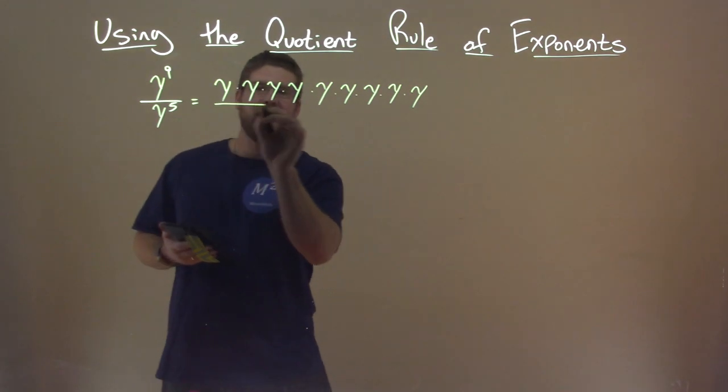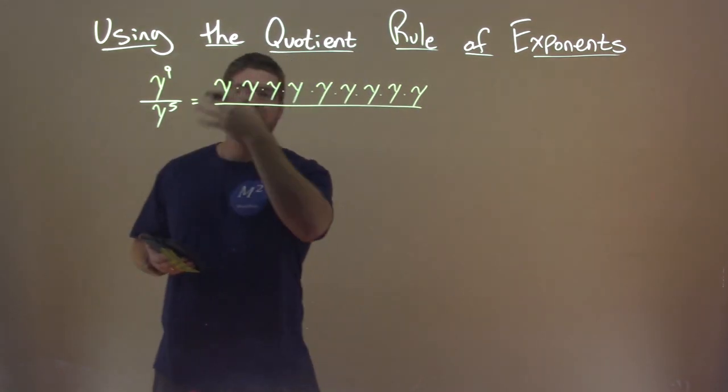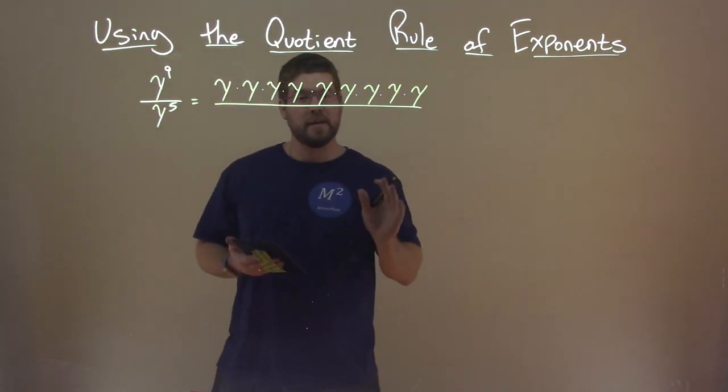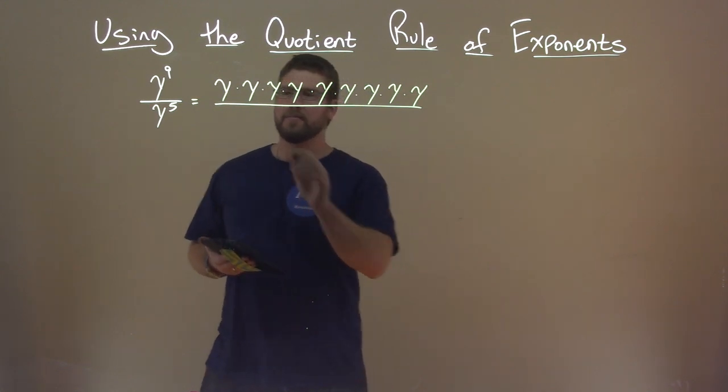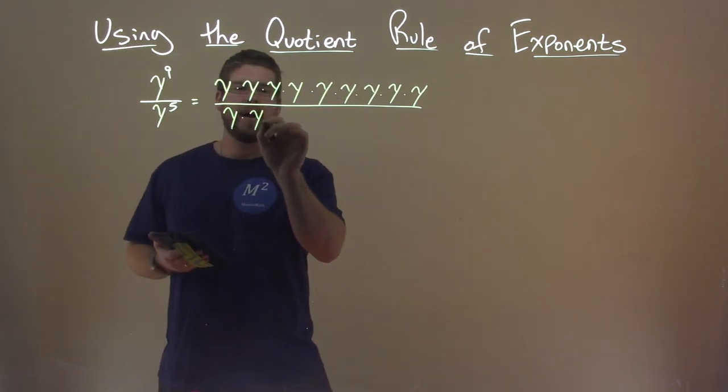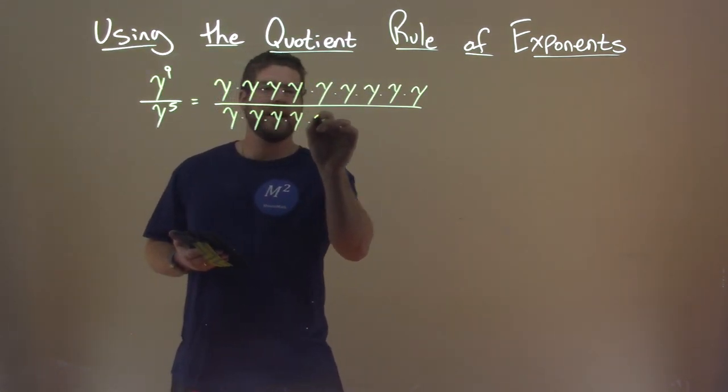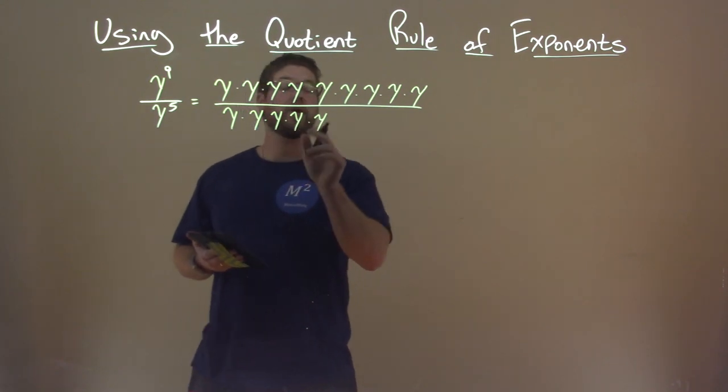On the denominator, y to the fifth power is y times itself five times. y, y, y, y, and y. One, two, three, four, and five.